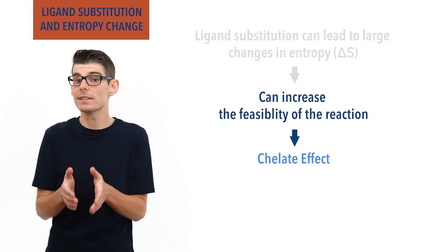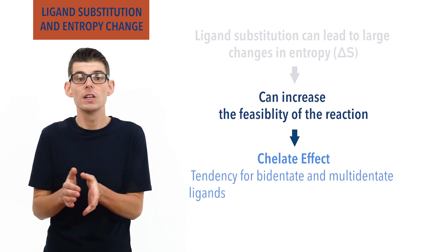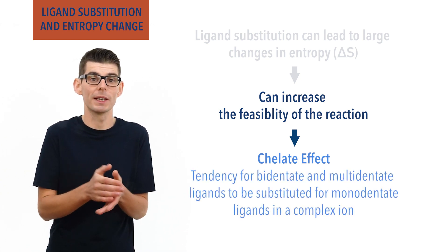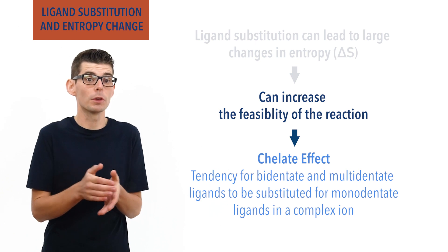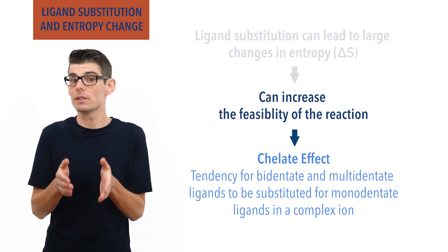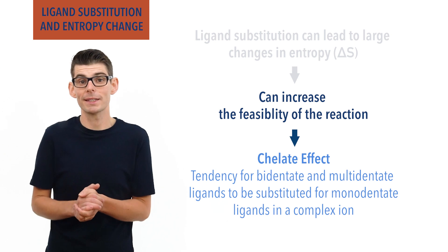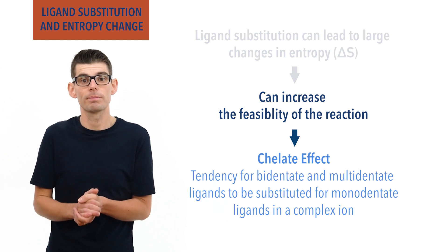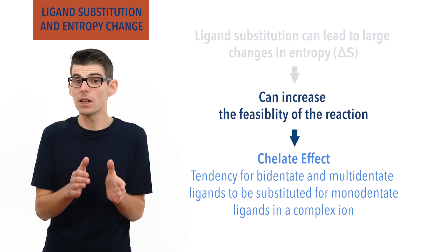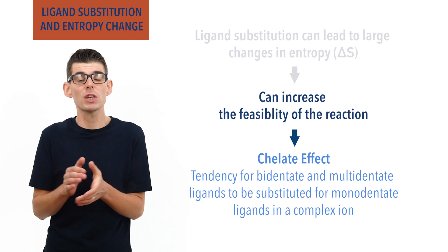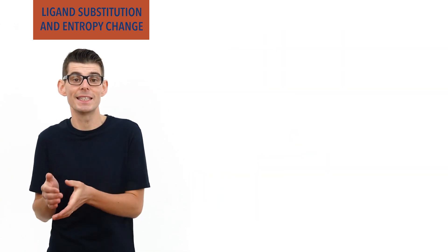The large positive entropy changes associated with bidentate and multidentate ligand substitutions increases the feasibility of them occurring, and this leads to what is called the chelate effect — a tendency for bidentate and multidentate ligands to be substituted into complex ions and replace monodentate ligands, giving stable and relatively unreactive complexes. Sometimes the chelate effect can be very large, especially with multidentate ligands such as EDTA.